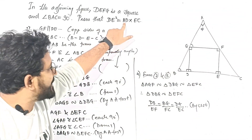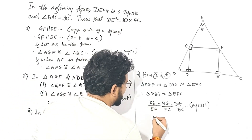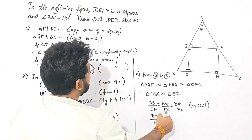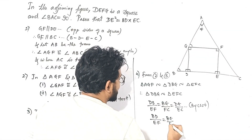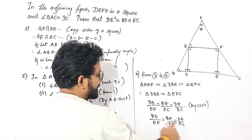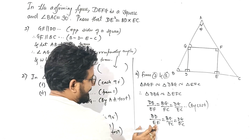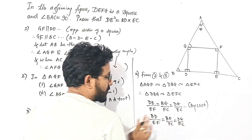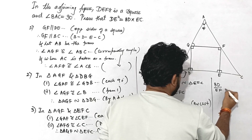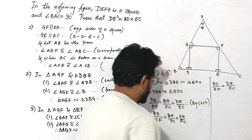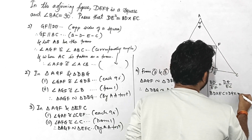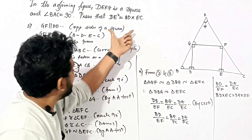Now this is the proof. BD and EC are required. Taking the first and last ratio: BD upon EF is equal to DG upon EC. Now cross multiply: BD into EC equals DG into EF.